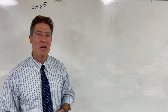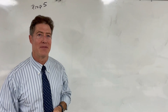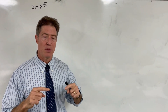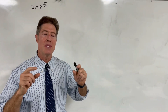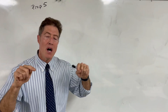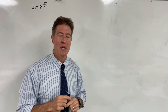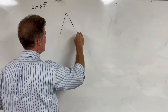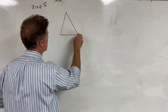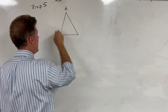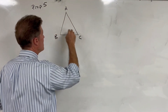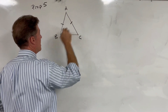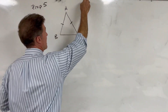Euclid's Elements, Book 1, Proposition 5. In isosceles triangles, the base angles are equal to each other, and if the lines be produced, then the angles under the base angles will also be equal to one another. So let's have a given isosceles triangle, call it ABC. In this triangle, line AB is equal to line AC. That's our given.